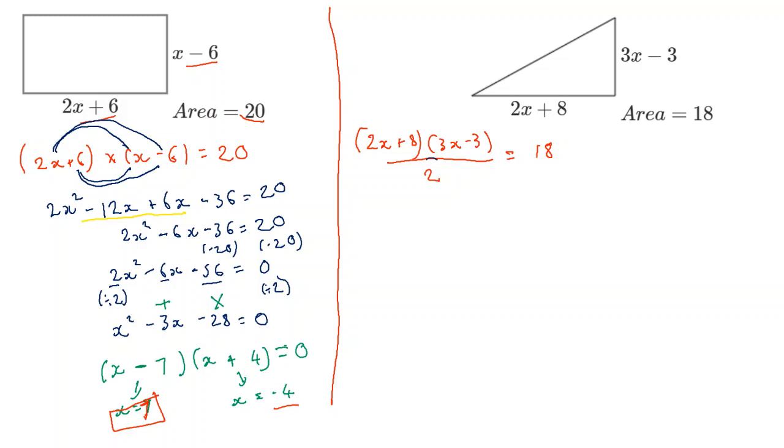Now, to undo this fraction here, we need to times both sides by 2. When I times by 2, we get 2x plus 8 times 3x minus 3 equals 18 times 2 is 36. After that, we expand out our bracket, giving 6x squared minus 6x plus 24x minus 24 equals 36. We simplify. Minus 6 plus 24 is plus 18. Minus 24 equals 36. We subtract 36 from both sides to make it equal to 0.